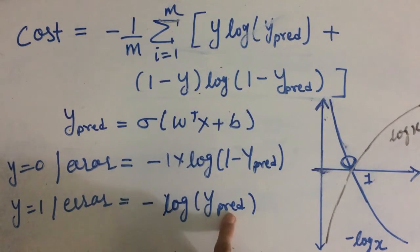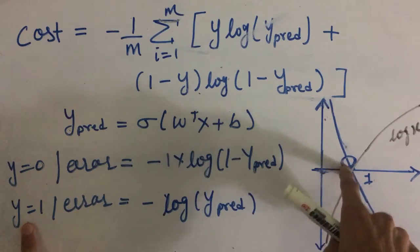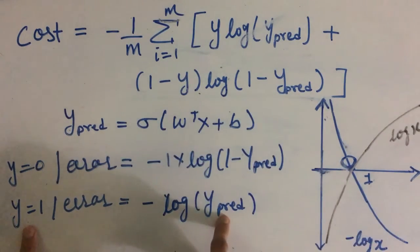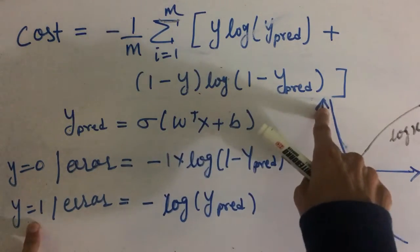And if the ypred is closer to 1, which is closer to our actual prediction, then our error will be less. And if ypred is closer to 0, which is far from our actual prediction, then our error will be high.